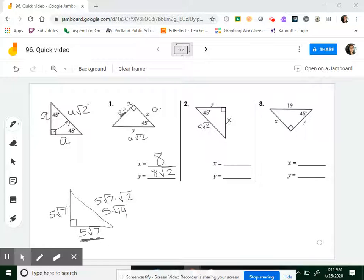In number two, they're giving you the hypotenuse. So I have my A, A, A root 2. That means my A root 2 equals 5 root 2. So what does A have to equal? Well, you just divide. Those are multiplying, and the opposite of multiplying is dividing. So my A is 5. Both X and Y are 5.